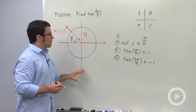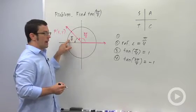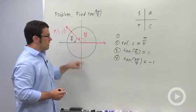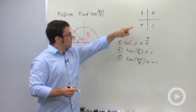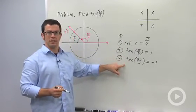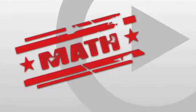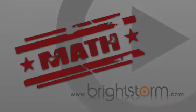So just remember: draw a diagram, identify the reference angle, find the tangent of that reference angle, and then use the quadrant to decide whether the tangent's positive or negative.